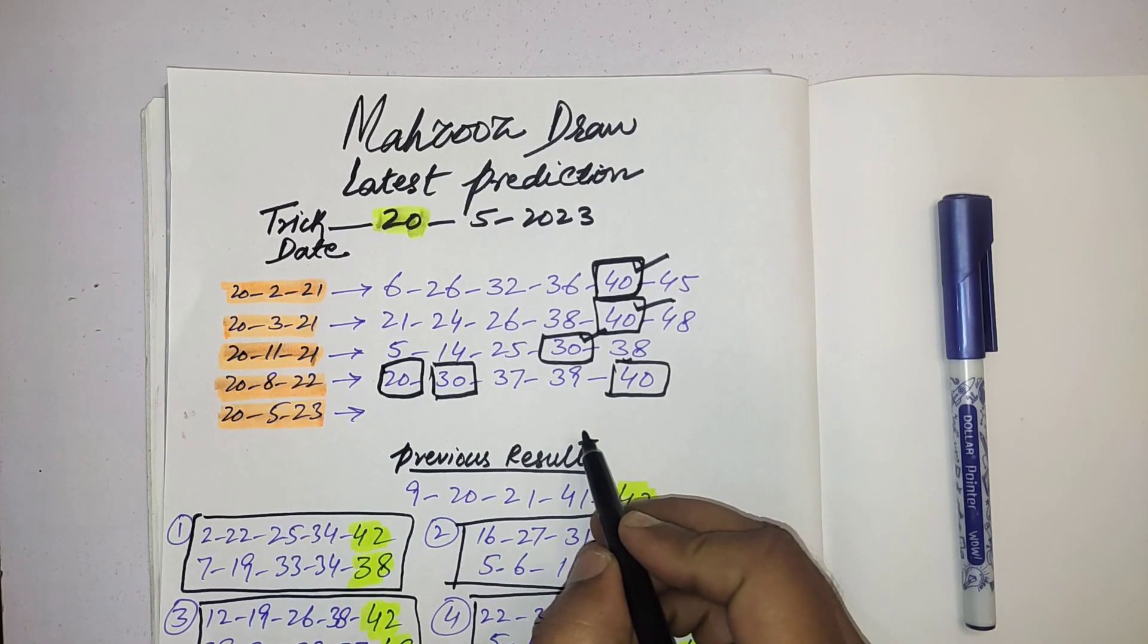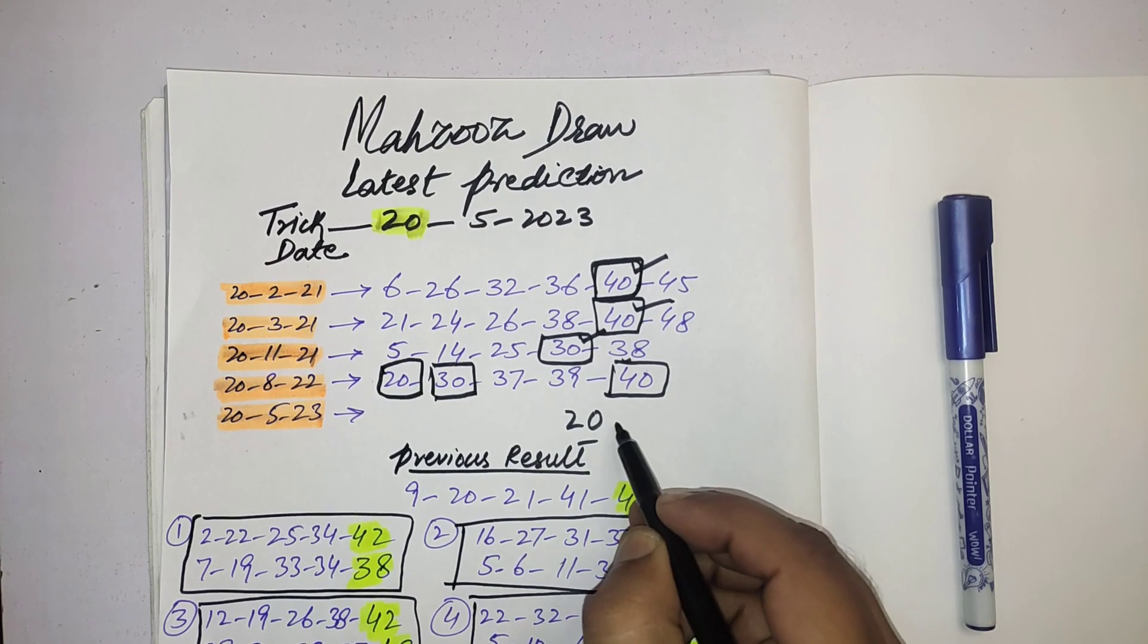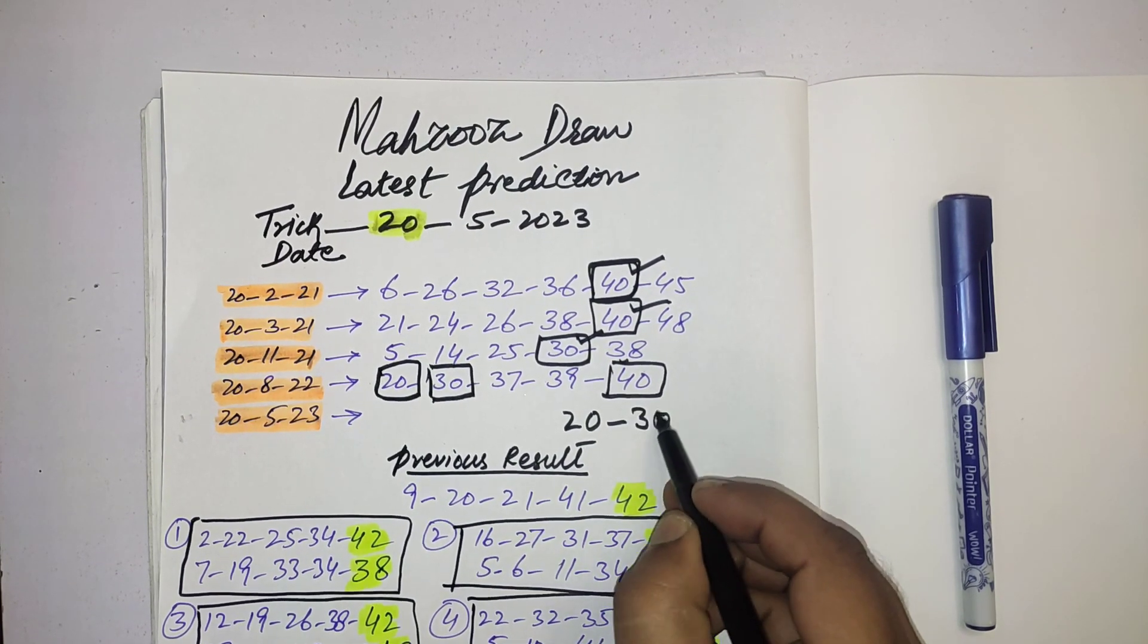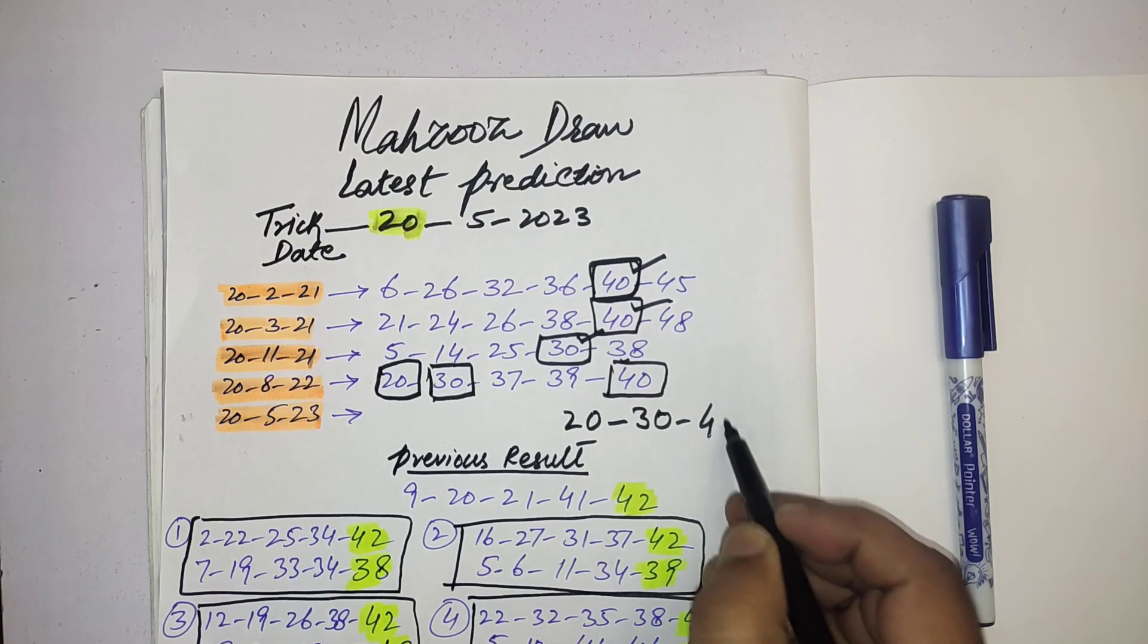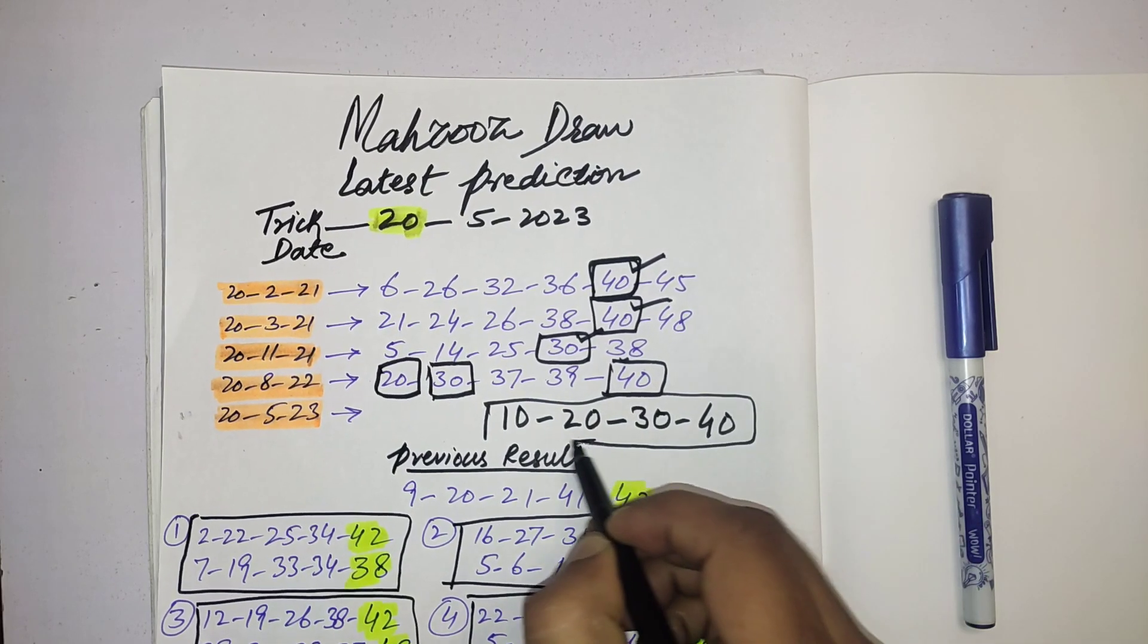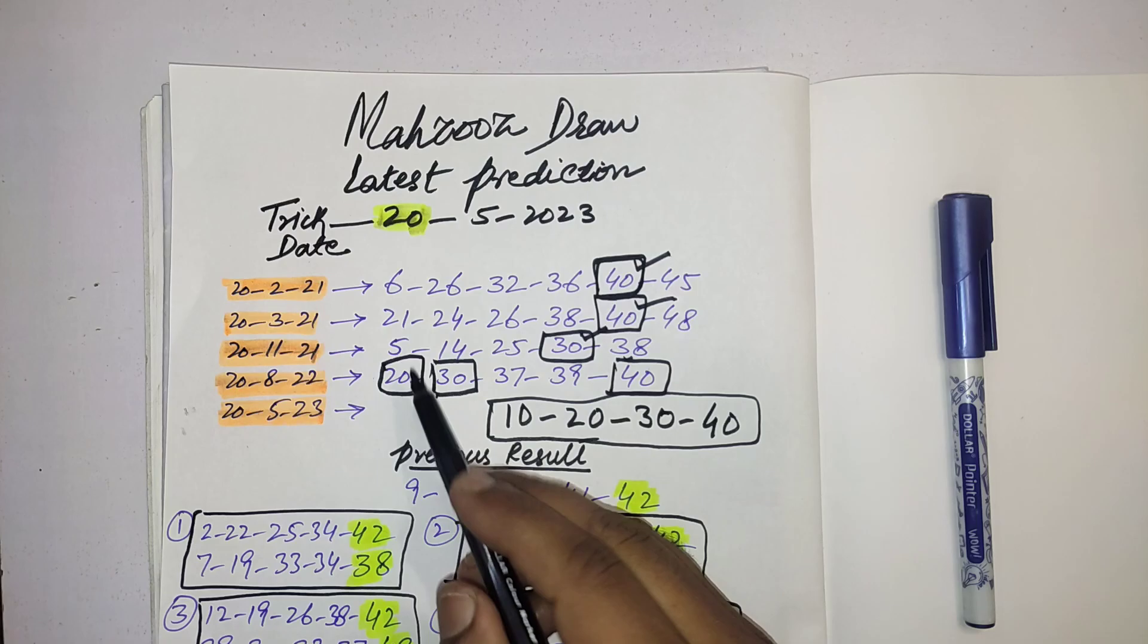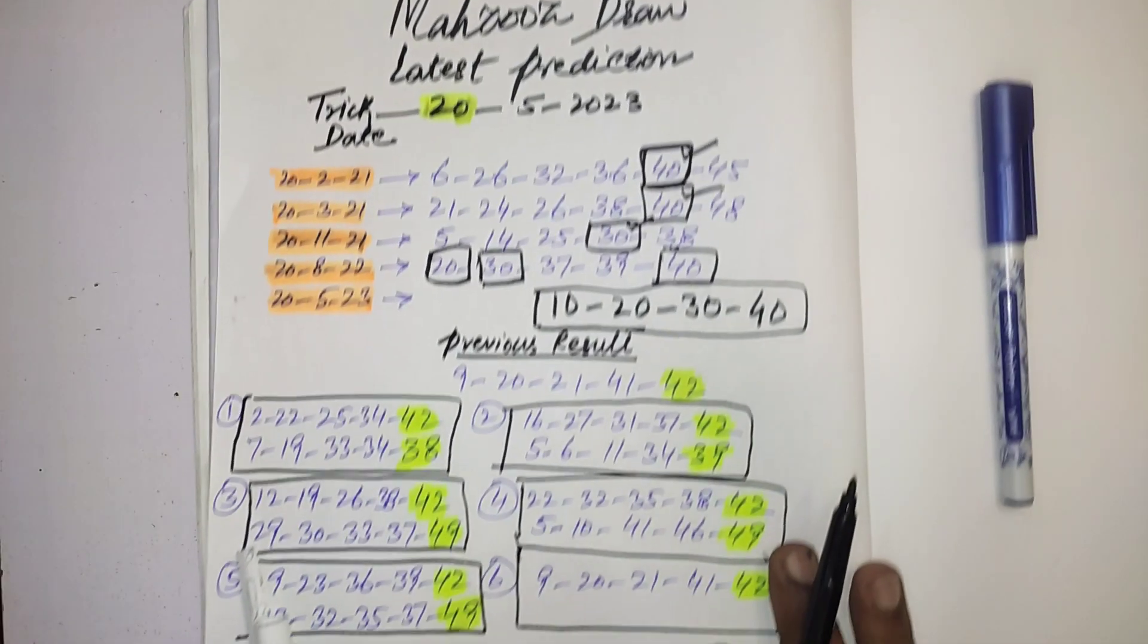You should select one or two numbers from these numbers: 20, 30, 40, and 10. You should select one or two numbers between these numbers. These are most powerful numbers according to the past history.